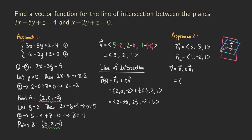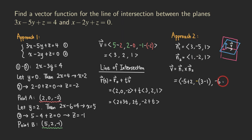Let's do the calculation. For the cross product N₁ × N₂: the first component is (−5)(1) − (1)(−2) = −5 + 2 = −3. The middle component has an extra minus sign: −((3)(1) − (1)(1)) = −(3 − 1) = −2. The last component: (3)(−2) − (−5)(1) = −6 + 5 = −1. So we get (−3, −2, −1).